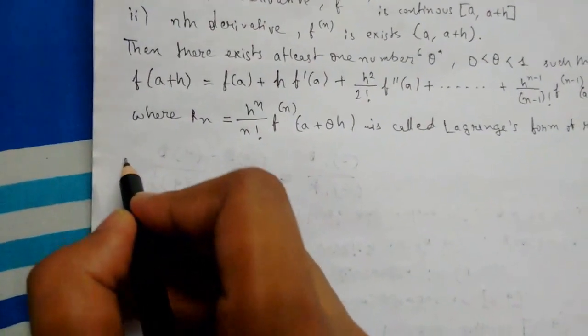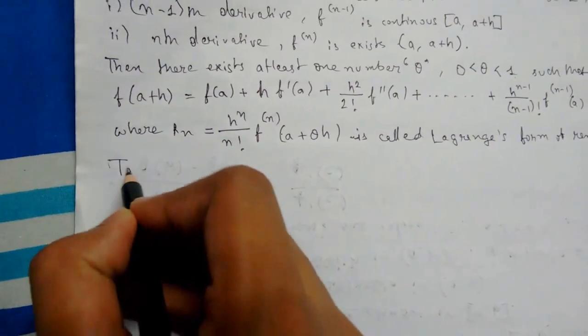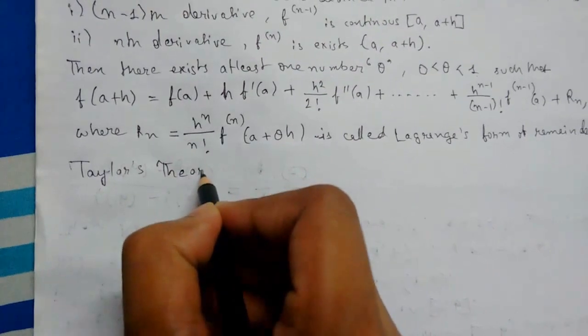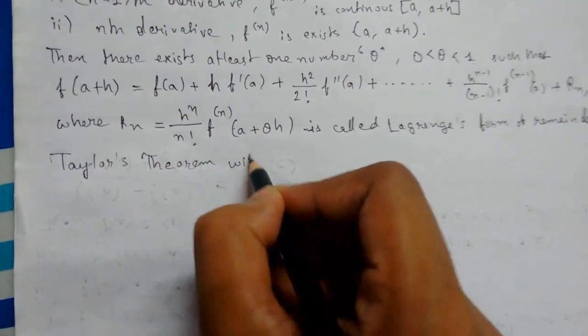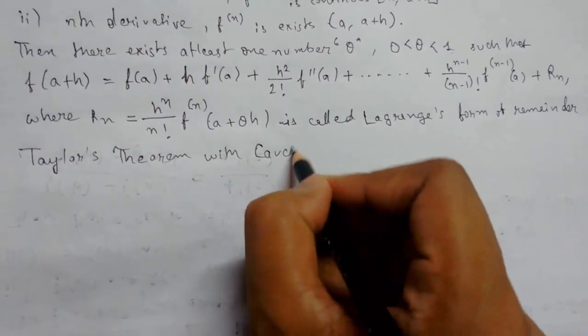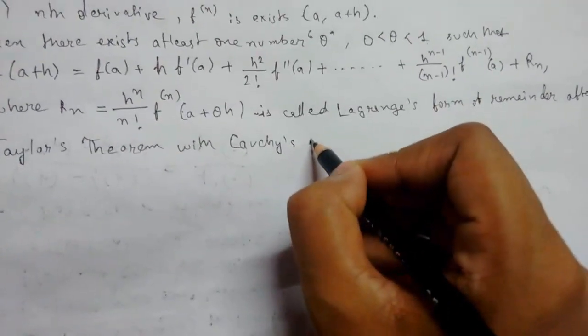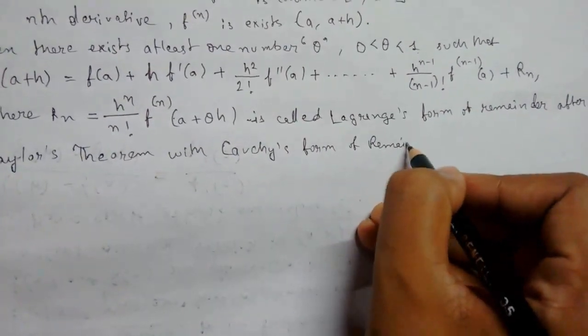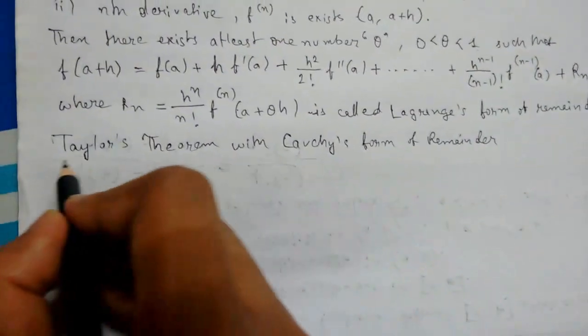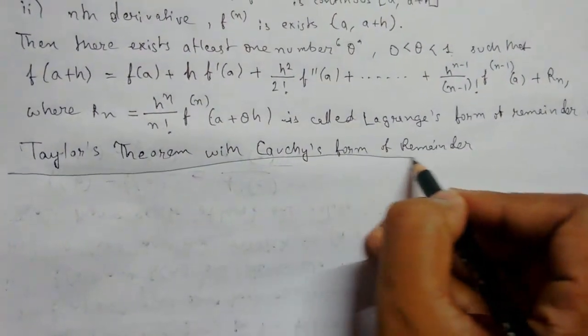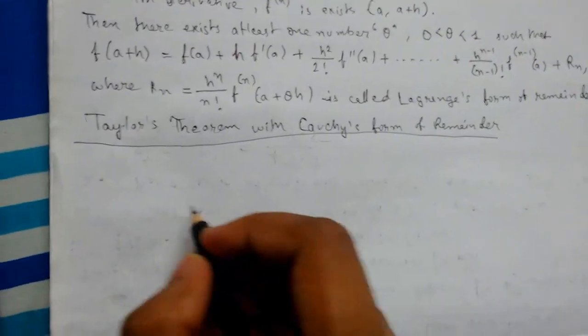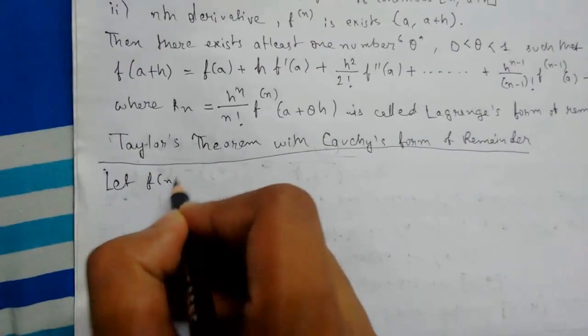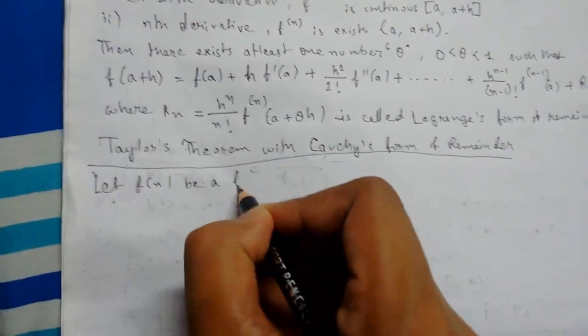Now let us move on to our second form: Taylor's theorem with Cauchy's form of remainder. This is slightly different but almost similar to the previous one. Let me again define it. Let f(x) be a function...